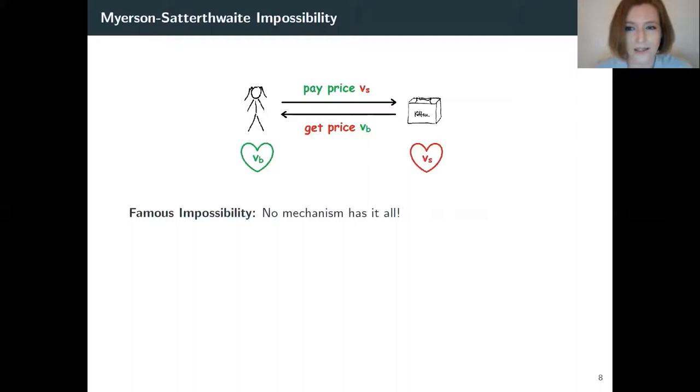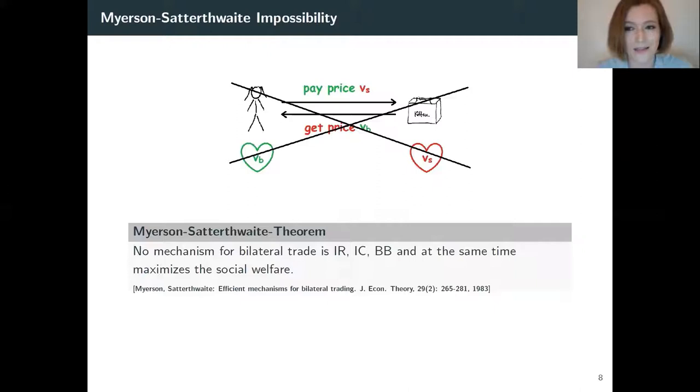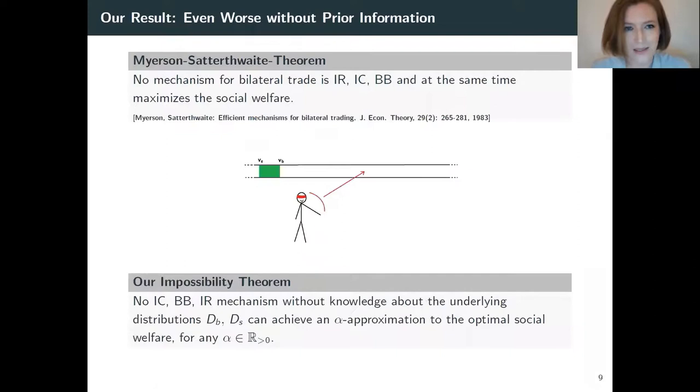On top of this, there is also a famous impossibility result for bilateral trade, and that is the Myerson-Satterthwaite theorem. This theorem says there is actually no mechanism that can do this. If you want to be individually rational, incentive compatible, budget balanced, and you also want to maximize the social welfare, this is simply impossible.